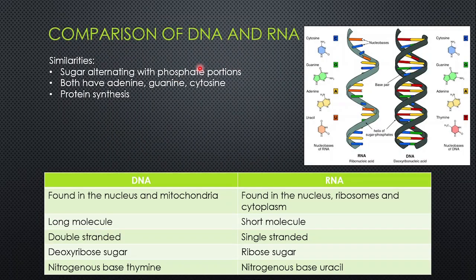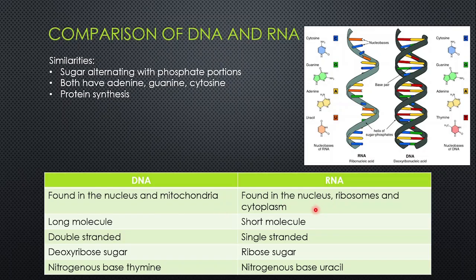A comparison of DNA and RNA: similarities include sugar alternating with phosphate portions in the nucleotides, both have adenine, guanine, and cytosine, and both have a function in protein synthesis. Differences: DNA is found in the nucleus and mitochondria, whereas RNA is found in the nucleus, ribosomes, and cytoplasm. DNA is a long molecule; RNA is a short molecule. DNA is double-stranded; RNA is single-stranded. DNA has deoxyribose sugar; RNA has ribose sugar. DNA has the nitrogenous base thymine, which is replaced by uracil in RNA.